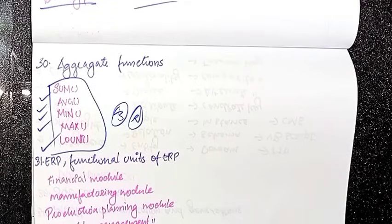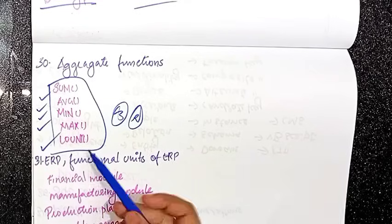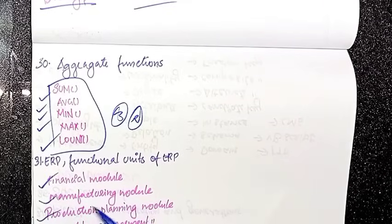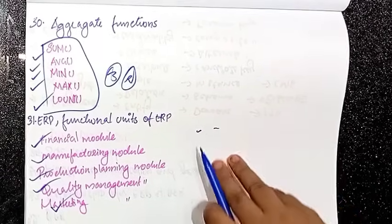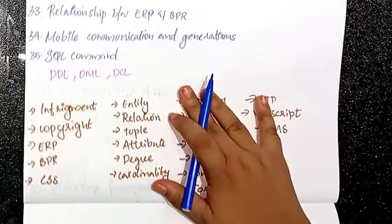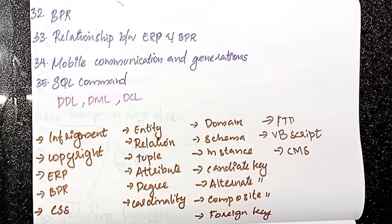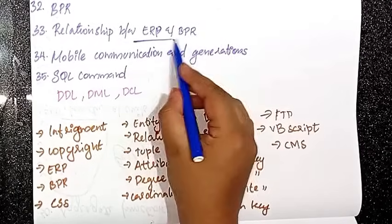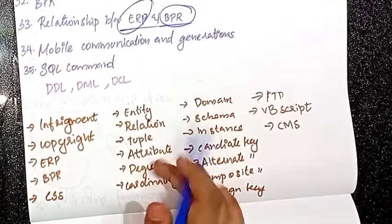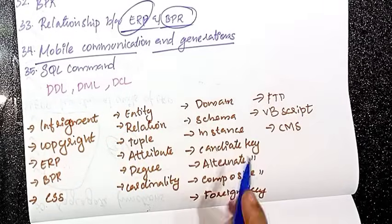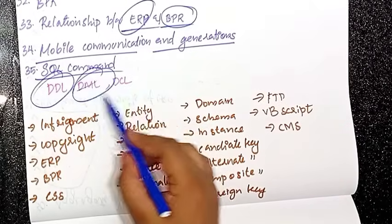The next topic is ERP — Enterprise Resource Planning. What are the functional units of ERP? These include: financial module, manufacturing module, production planning module, quality management module, and marketing module — many modules to study. Then BPR — Business Process Re-engineering — and the relation between ERP and BPR. Also, mobile communication and its generations. SQL commands: DDL, DML, DCL, etc.